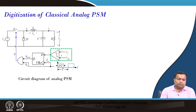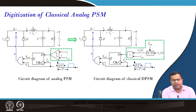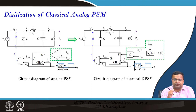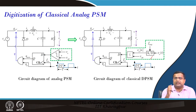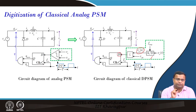Now, if you want to digitize, what do we do? This comparator block will digitize and instead of using an analog comparator, we can simply use an A-to-D converter. Suppose we are incorporating this PSM logic into an existing DPWM logic. We will take the advantage of the ADC, take the sample there, and the sampling clock will be the same as the switching clock. We are digitizing this block and this is now a digital part.